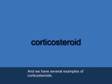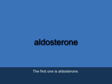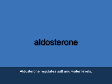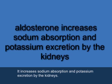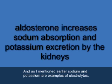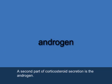We have several examples of corticosteroids. The first one is aldosterone (A-L-D-O-S-T-E-R-O-N-E). Aldosterone regulates salt and water levels. It increases sodium absorption and potassium excretion by the kidneys. Sodium and potassium are examples of electrolytes.